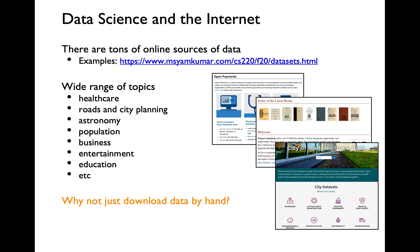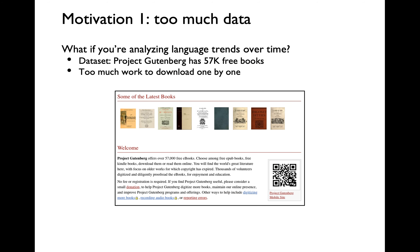Downloading that information might help us analyze how many people are taking the bus and what bus routes they are interested in, which might help us come up with a better bus schedule to serve people in a cost-efficient manner. So there is a ton of data out there on the internet. Why not just stick to downloading datasets manually like we've been doing for CS220 projects? The first motivation is that sometimes there might be too much data spread across multiple sources. Project Gutenberg has 57,000 books — imagine having to download every single book manually, which could take weeks. If you have an automated way of downloading using Python, you might be able to finish in a matter of a few hours.